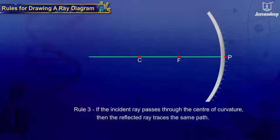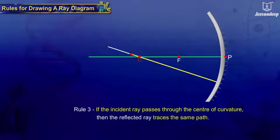Rule 3: If the incident ray passes through the center of curvature, the reflected ray traces the same path.